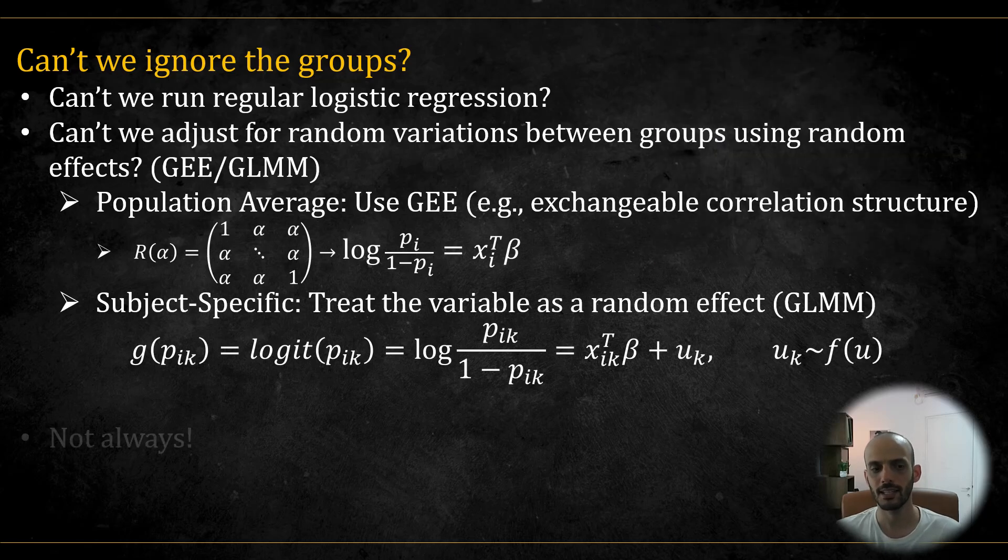In a random intercept model GLMM gives different curves for each stratum based on their intercepts, while GEE produces a single global slope across the population. So the answer to these questions is that sometimes we can do that but not always and in matched case control it's often the case that we cannot do this and we have to use conditional logistic regression.